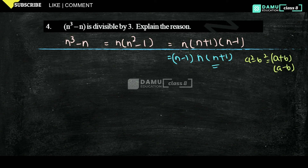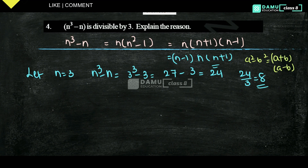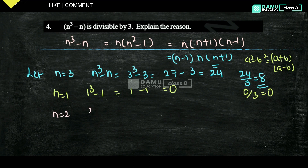The product of 3 consecutive numbers is always divisible by 3. Let's verify: for n equals 3, n cubed minus n equals 27 minus 3 equals 24, and 24 divided by 3 equals 8 — yes, divisible. For n equals 1, it equals 0, and 0 divided by 3 equals 0 — yes, divisible. For n equals 2, it equals 8 minus 2 equals 6, and 6 divided by 3 equals 2 — yes, also divisible.